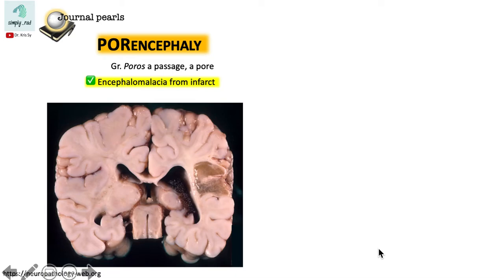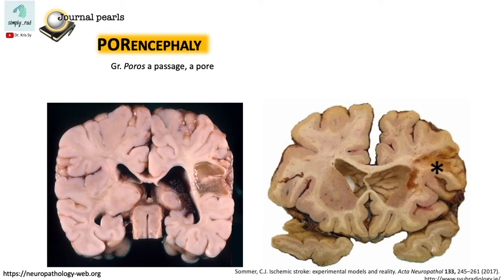It's important to understand that porencephaly most often occurs due to ischemic infarcts early in life. What happens during infarcts? When a tissue dies, it eventually gets replaced by fluid. We see that happen a lot in adults, and during chronic infarcts, we note changes referred to as encephalomalacic changes.